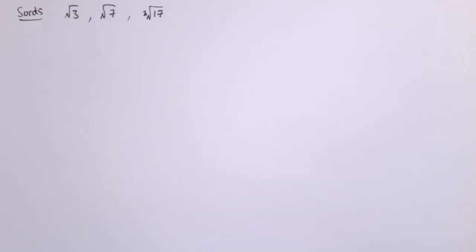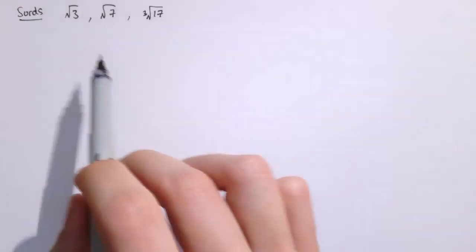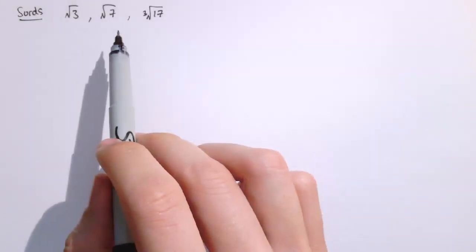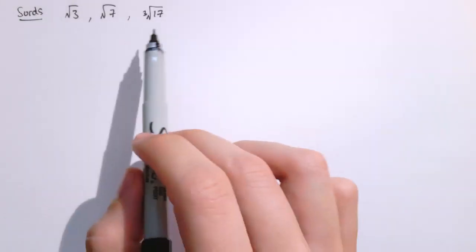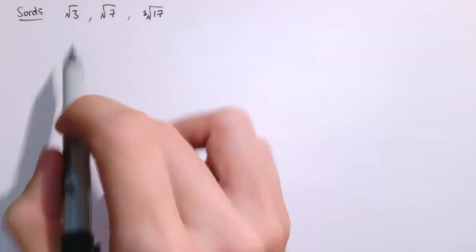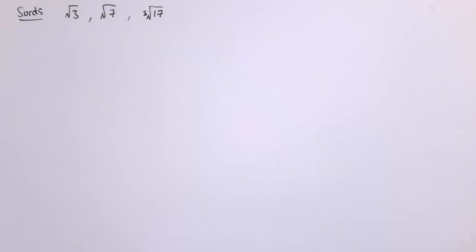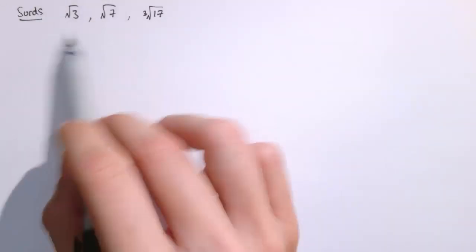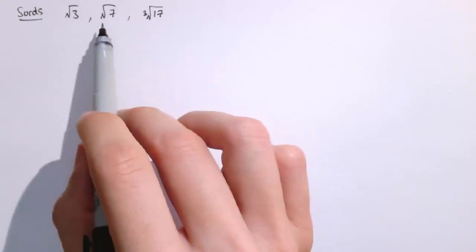In this video we're going to look at surds. I've got a few examples here like root 3, root 7, cube root of 17. Anything which is inside a square root or a cube root or some other root like a 4th root or a 5th root is a surd. And we're going to start by looking at square roots.